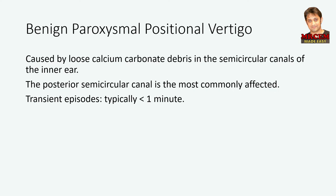Let's talk about benign paroxysmal positional vertigo (BPPV). It is thought to be caused by loose calcium carbonate debris in the semicircular canals of the inner ear. When the head moves, the debris moves in the semicircular canals, causing motion of the fluid of the inner ear leading to vertigo. The posterior semicircular canal is the most commonly affected. BPPV can affect people of any age but commonly presents between the fifth and seventh decades, and women are affected more often than men. Vertigo occurs in transient episodes typically lasting less than one minute, preceded by position change. Hearing is not affected, and tinnitus is not a feature. Diagnose posterior semicircular canal BPPV if the Dix-Hallpike maneuver provokes vertigo and torsional upbeating nystagmus.